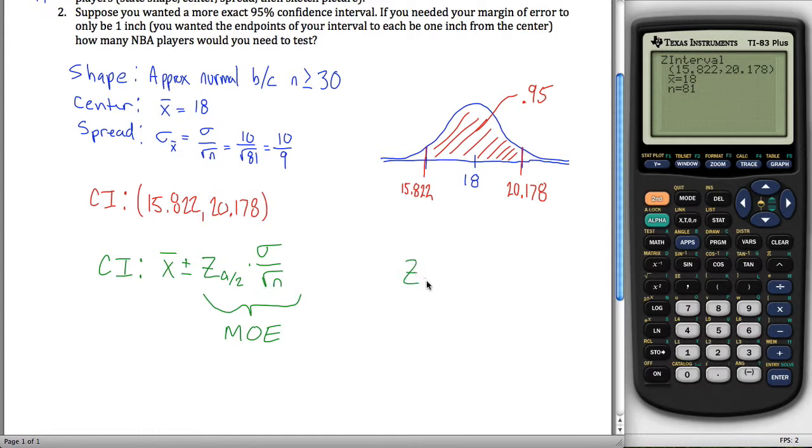We want z sub alpha over 2 times sigma over the square root of n to be equal to 1. It says figure out what n would have to be, how many NBA players would you need to test, if we want our margin of error to only be one inch. So if we can figure out what sigma and z sub alpha over 2 is, we can solve this equation for n.